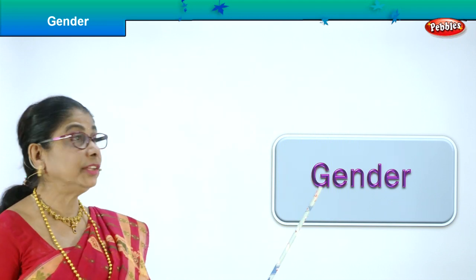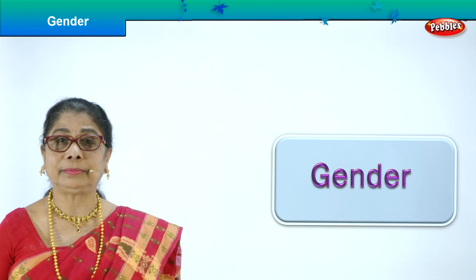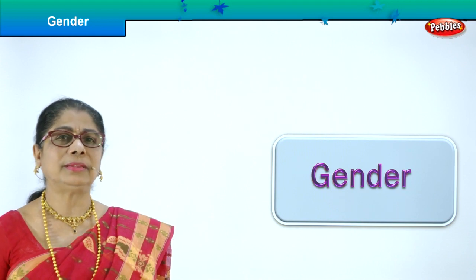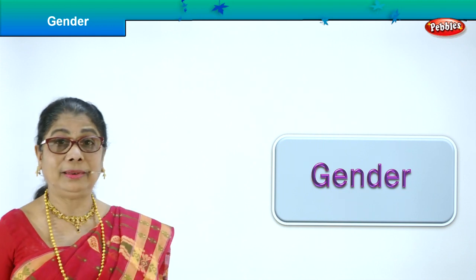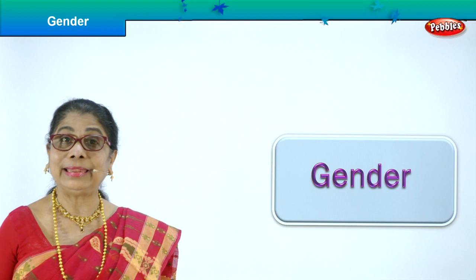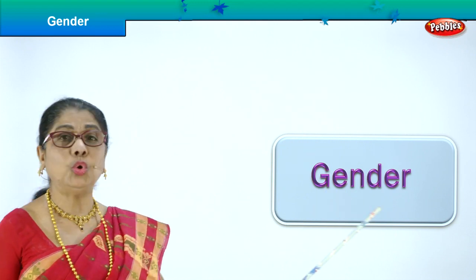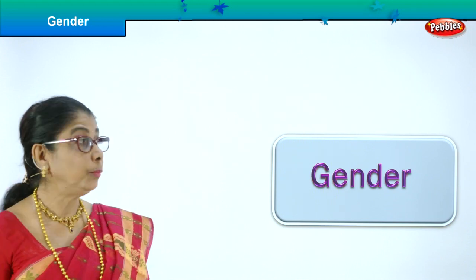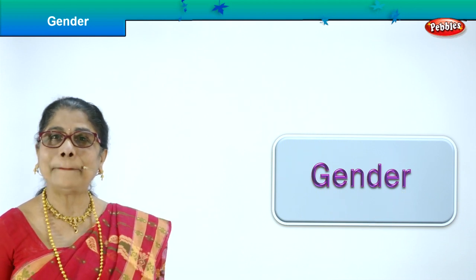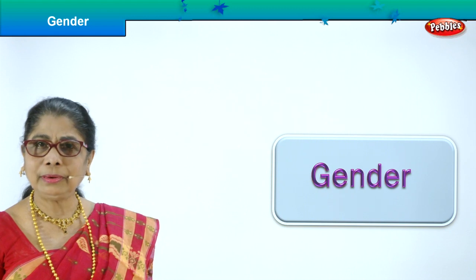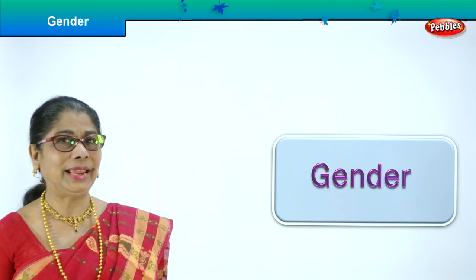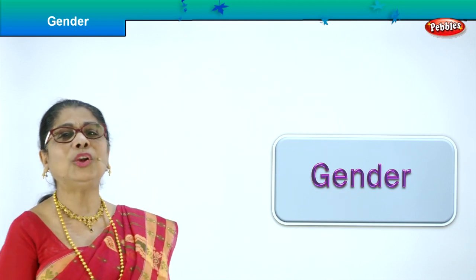Hi children, let's talk about gender. What is gender? There are two kinds of gender: masculine and feminine. Mummy is feminine, daddy is masculine. We are going to look at gender in people and in animals. I am sure you are going to enjoy this. I will show you pictures of people and pictures of animals, and we look at masculine gender and feminine gender. Very interesting exercise.